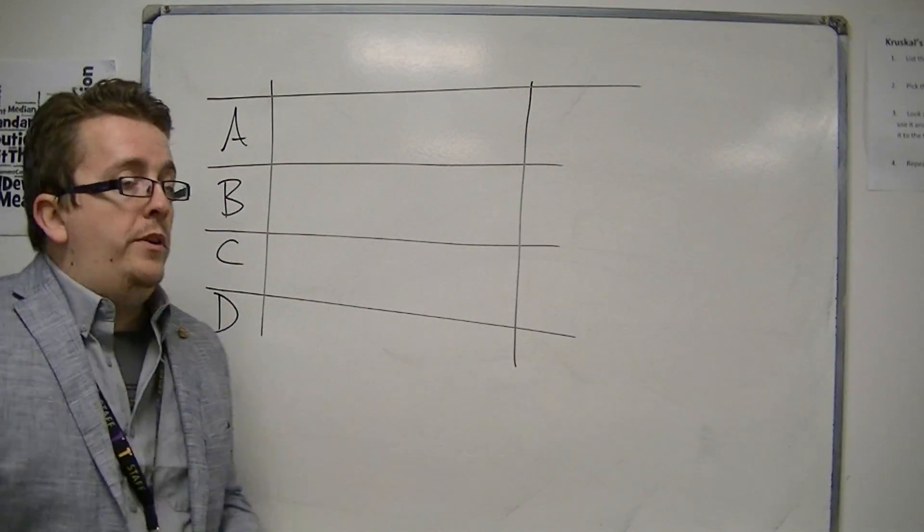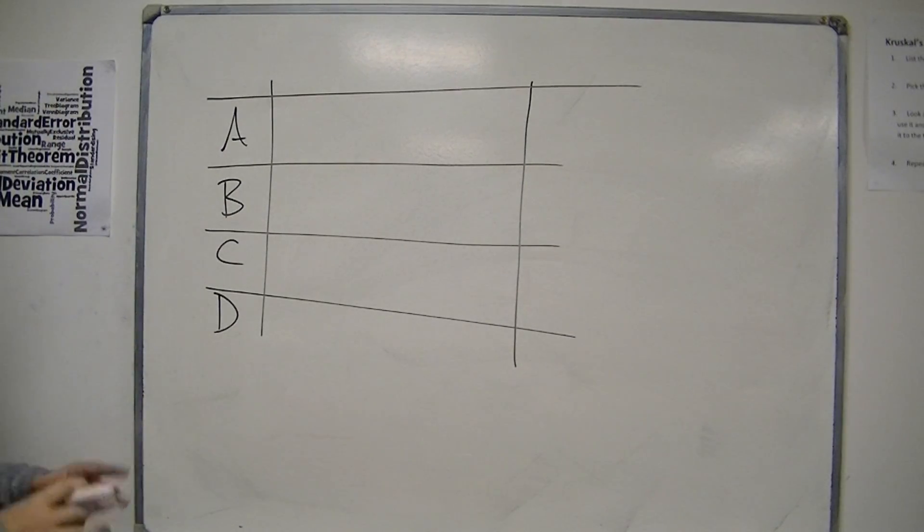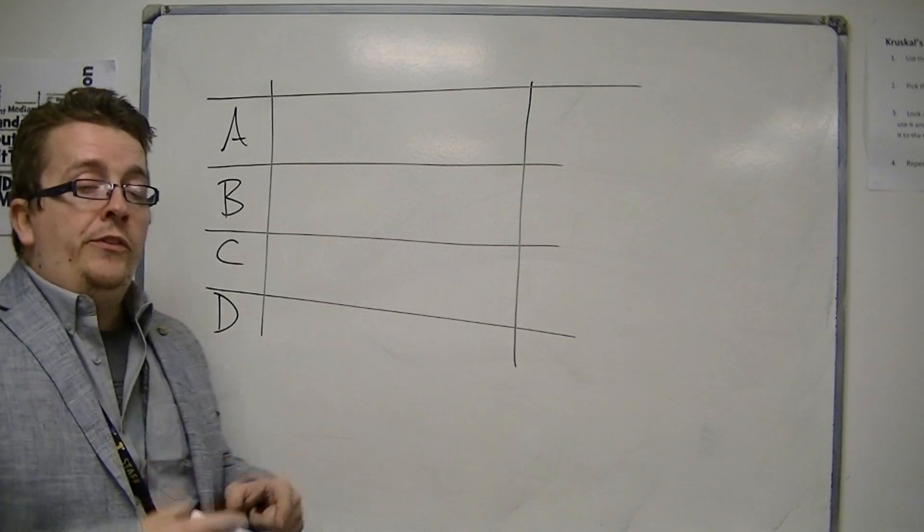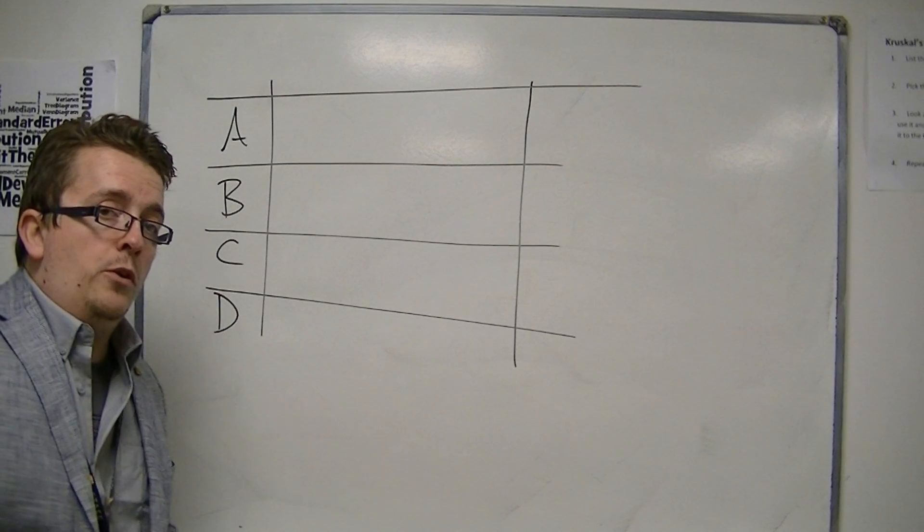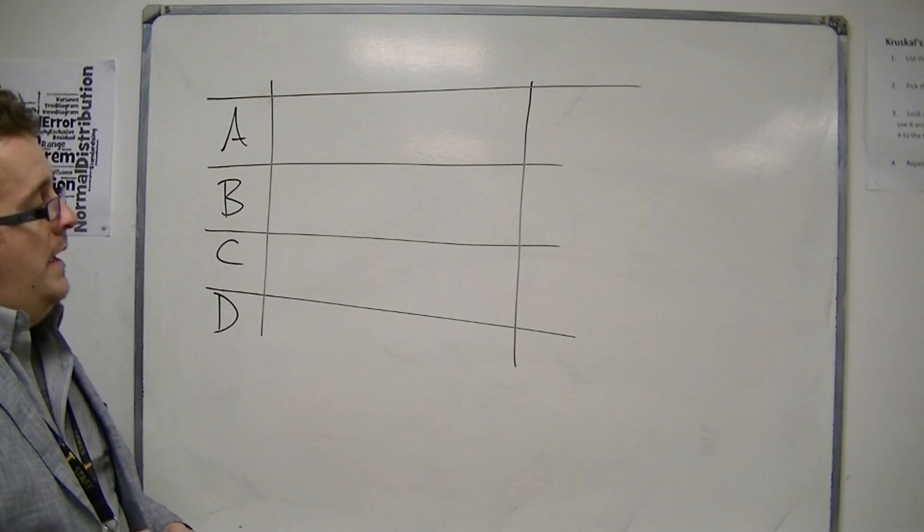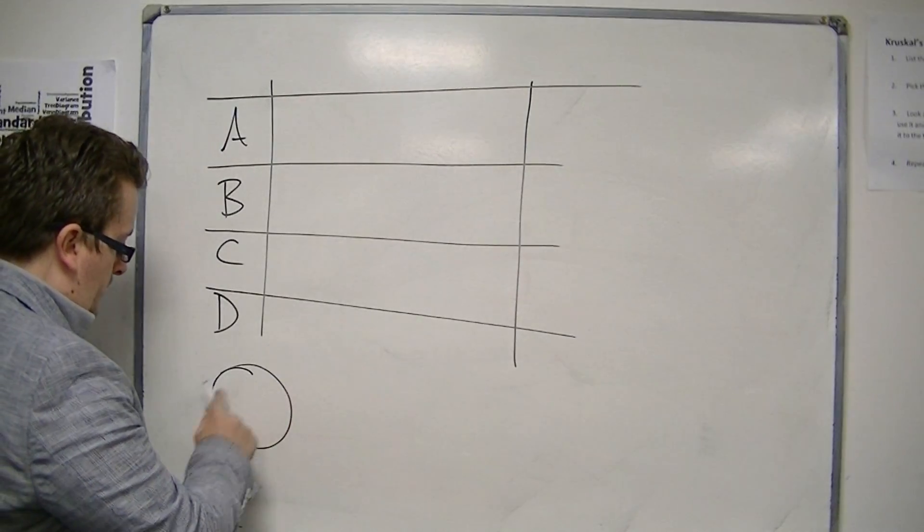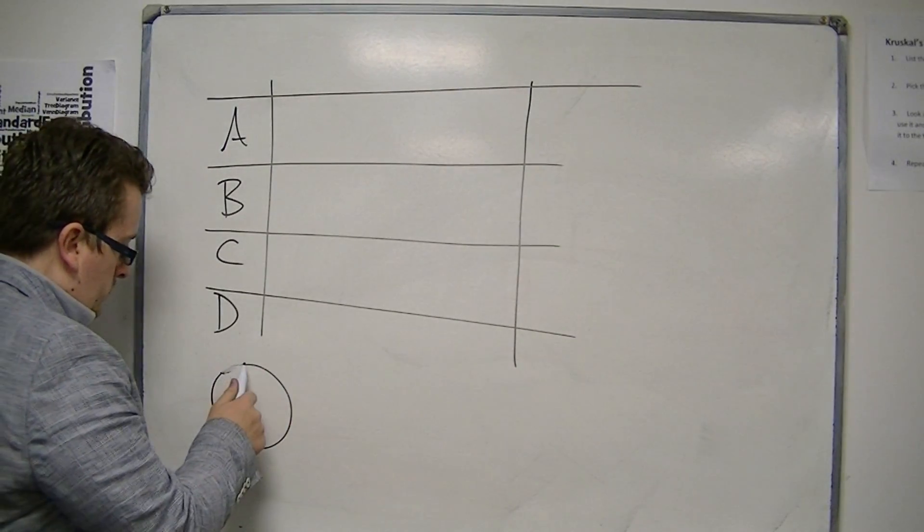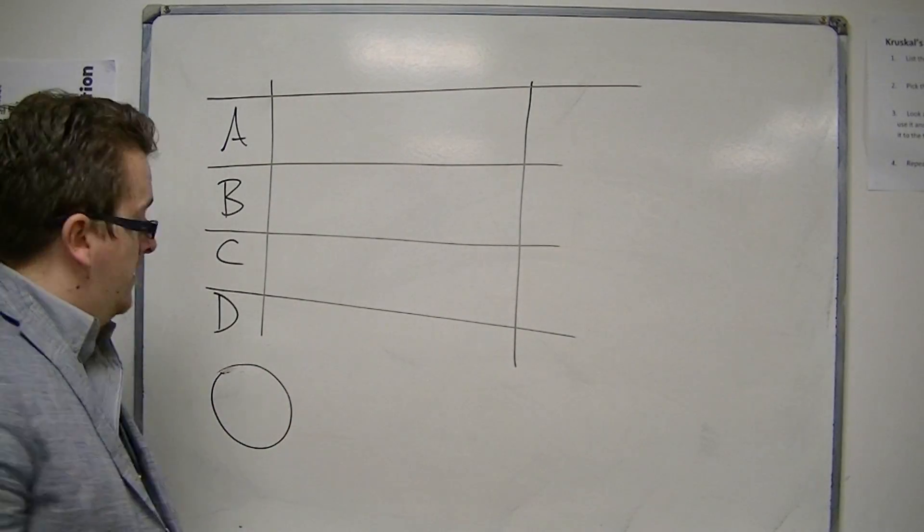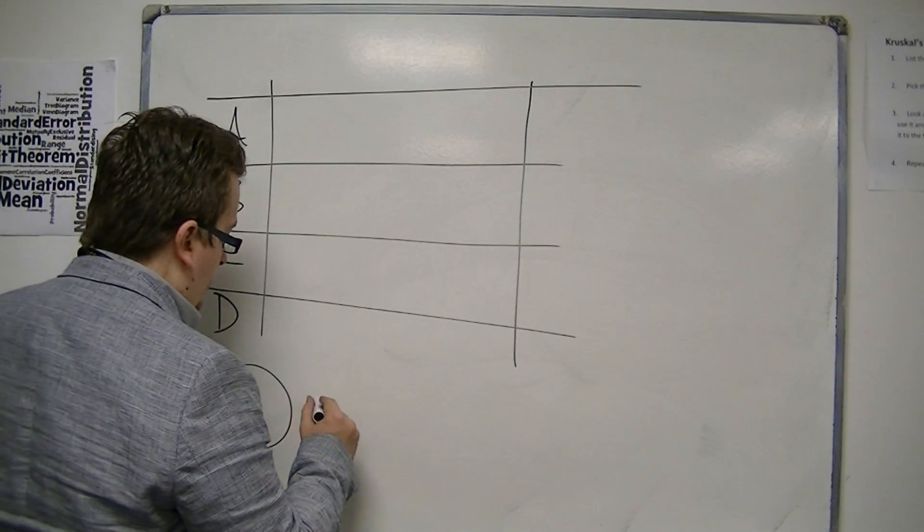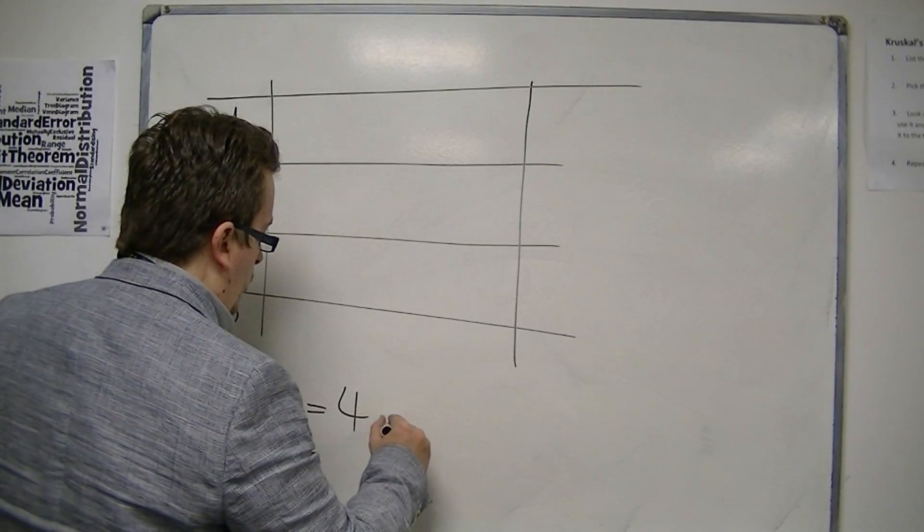And what we're going to do is we're going to say, right, well, each of these players scored a certain number of goals this season. And what we're going to do is we're going to use this football, or this circle in this case, to represent four goals.